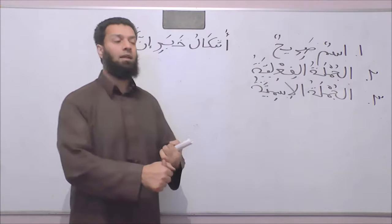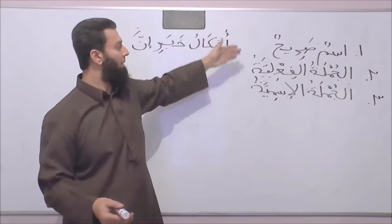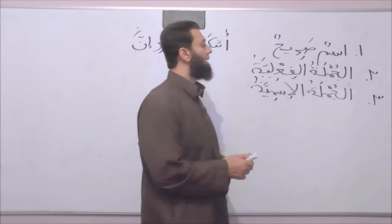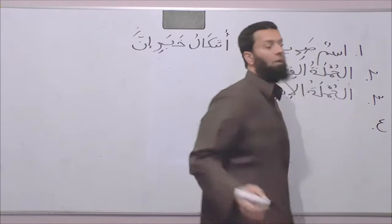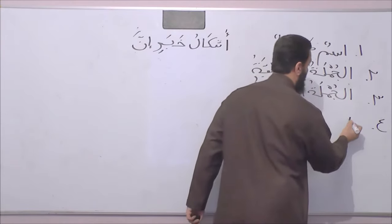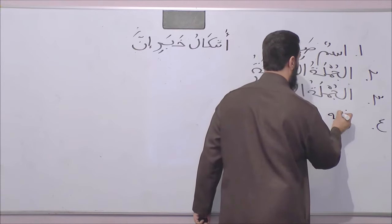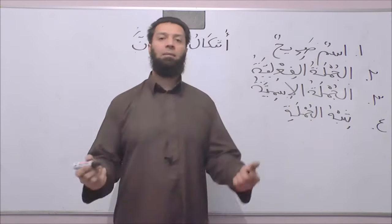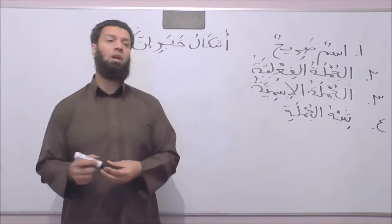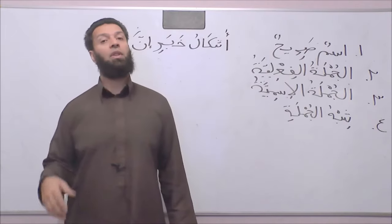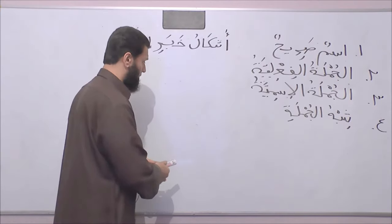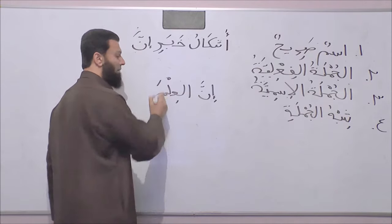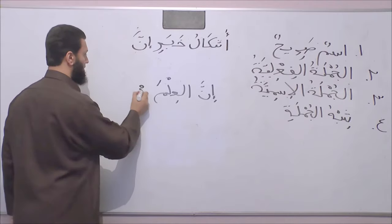So far we have seen that the خبر إنّ can be: an اسم صريح, it can be الجملة الفعلية, it can be الجملة الاسمية. What is the fourth and final type of خبر إنّ that we can have? It is شبه الجملة — that phrase that we've used frequently.